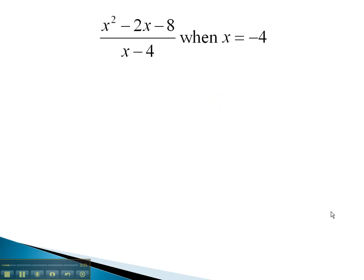We are going to start by evaluating rational expressions at certain points. This rational expression, we are told the x is equal to negative 4. As we have done before, if we know what x equals, we can replace each x in the expression with that value in parentheses.